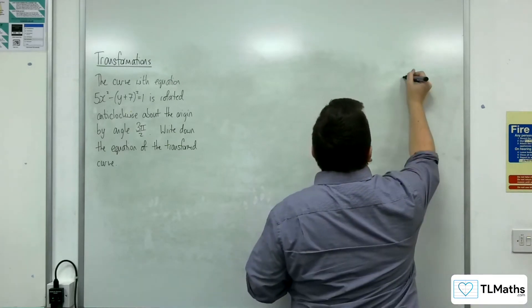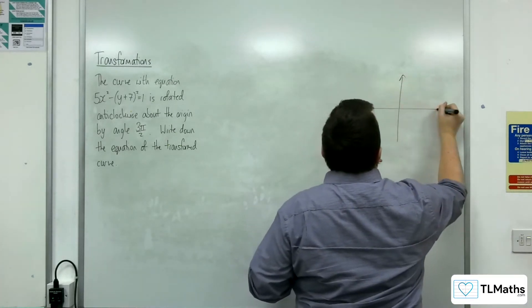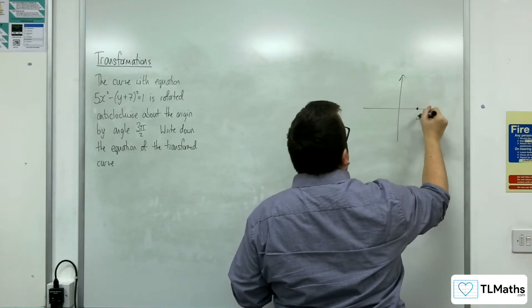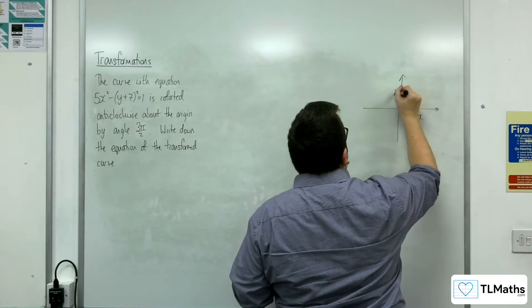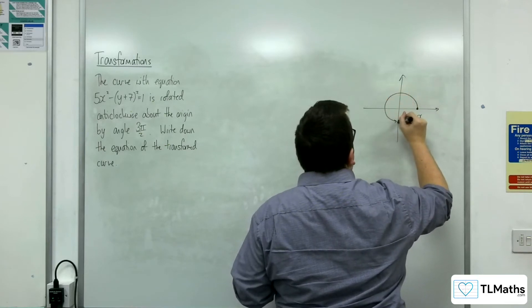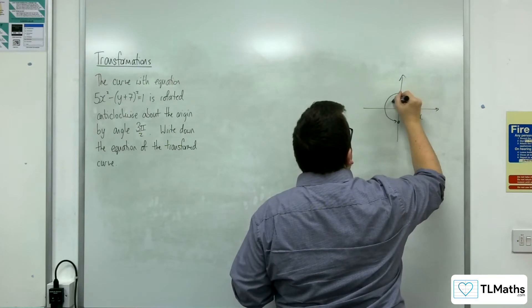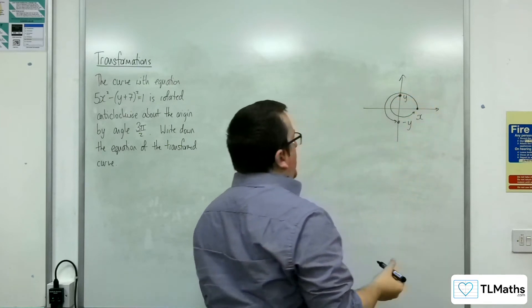So I'm going to draw a little diagram to think about what's happening when you rotate by 3π over 2 anticlockwise about the origin. Here's x and it's going to go all the way around to this point here which is minus y. And y will go all the way around and be replaced with x.